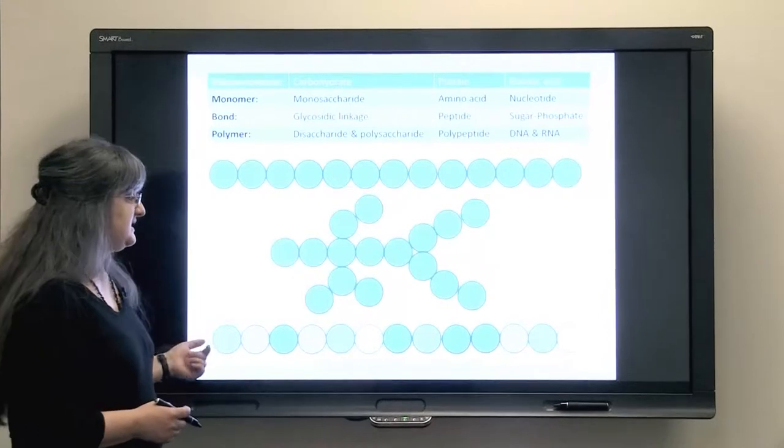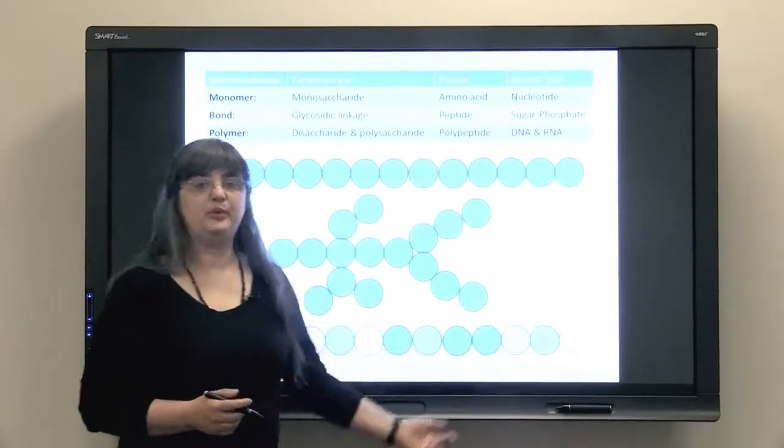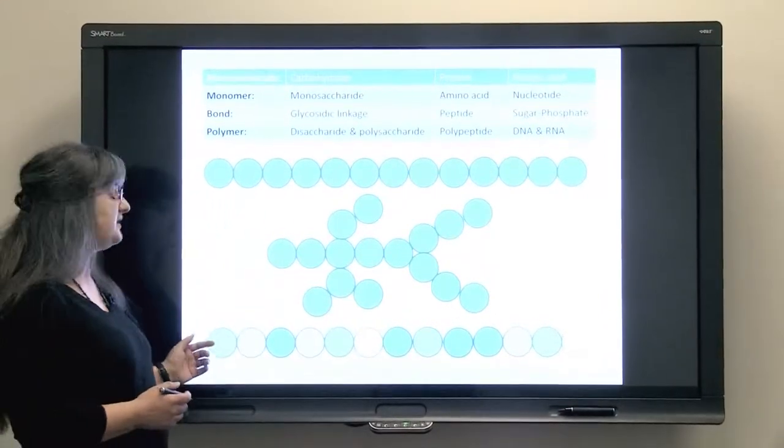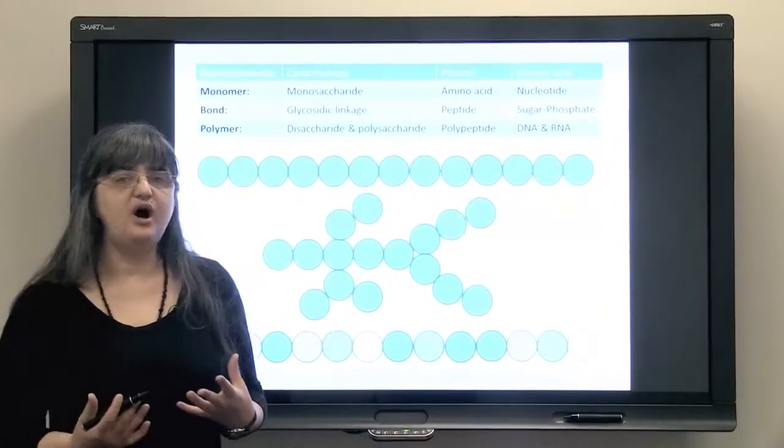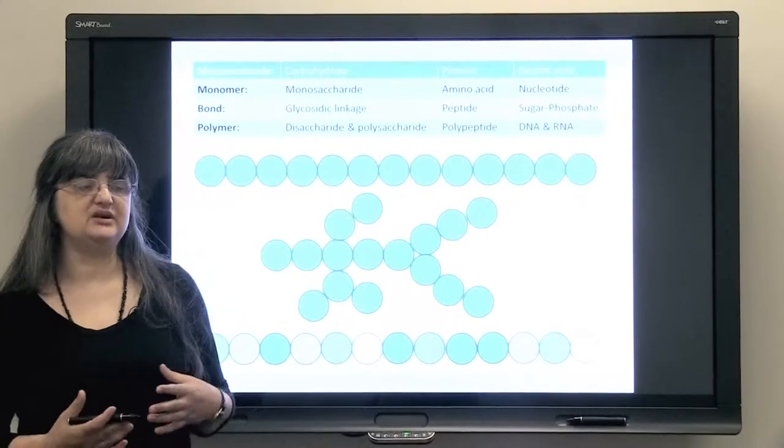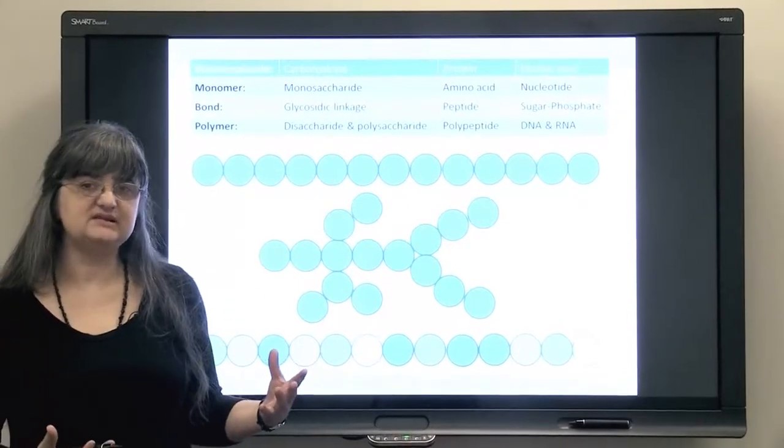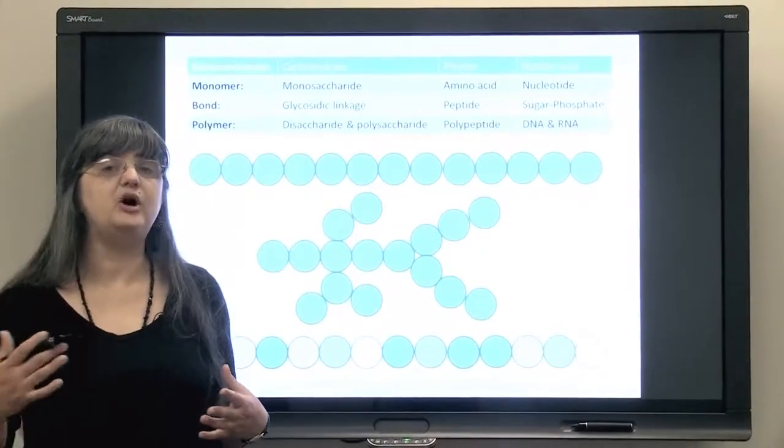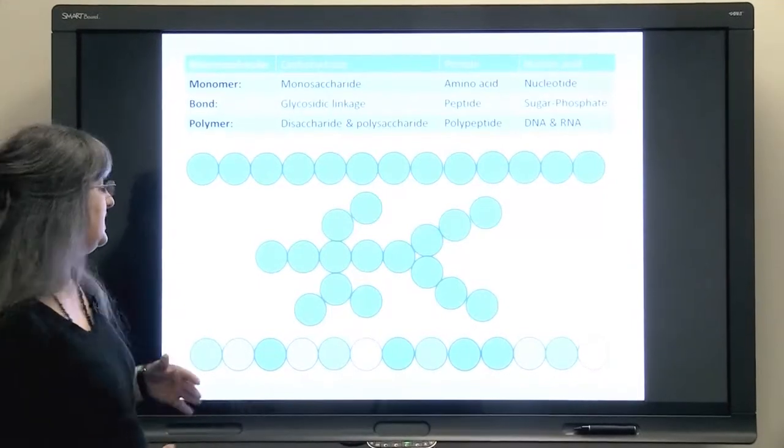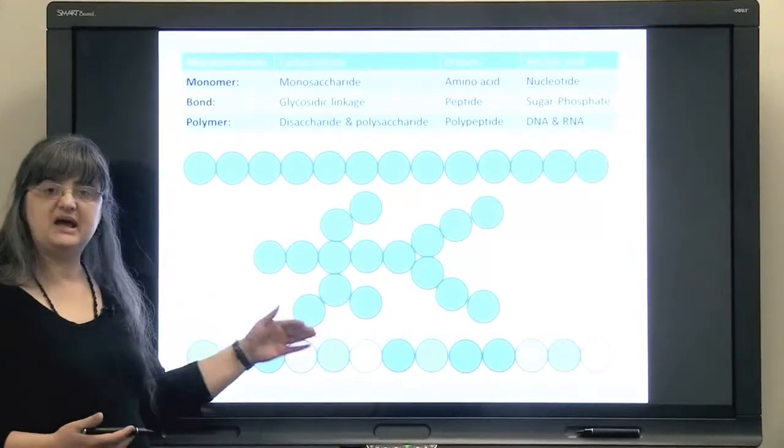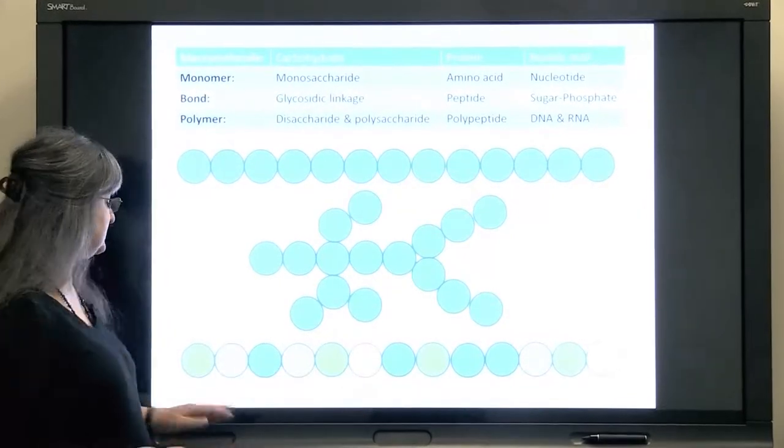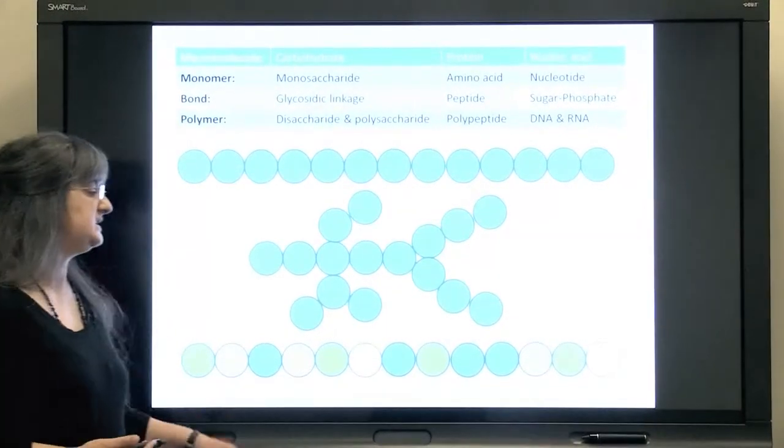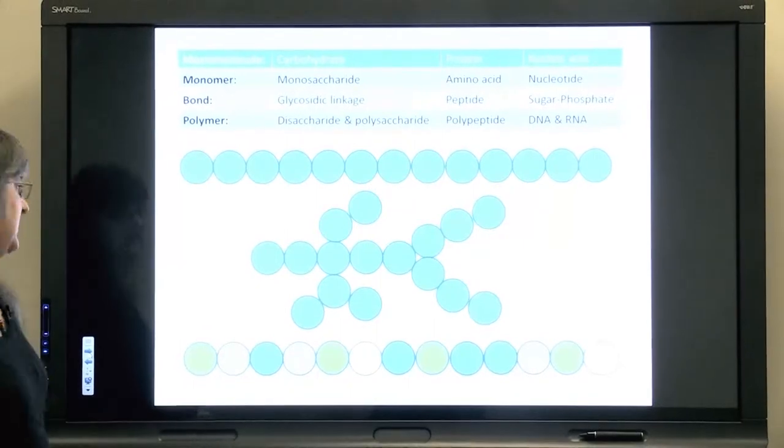Some polymers could consist of similar units. There is something common for all those units, but there is enough difference that they are different monomers. An illustration of this could be, for instance, a polypeptide, which is different amino acids linked in one single chain.